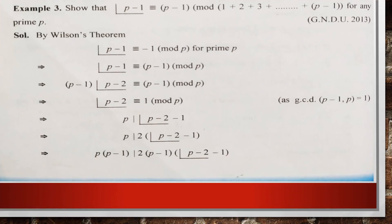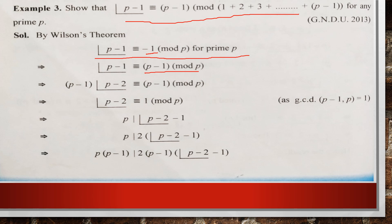Next: show that (p-1)! ≡ (p-1) modulo p(p-1)/2. We know Wilson's theorem, and we note that -1 ≡ (p-1) (mod p), since when we divide (p-1) by p we get remainder -1. Now splitting the left-hand side into two parts and taking factors, then canceling (p-1) from both sides, we get a new statement.